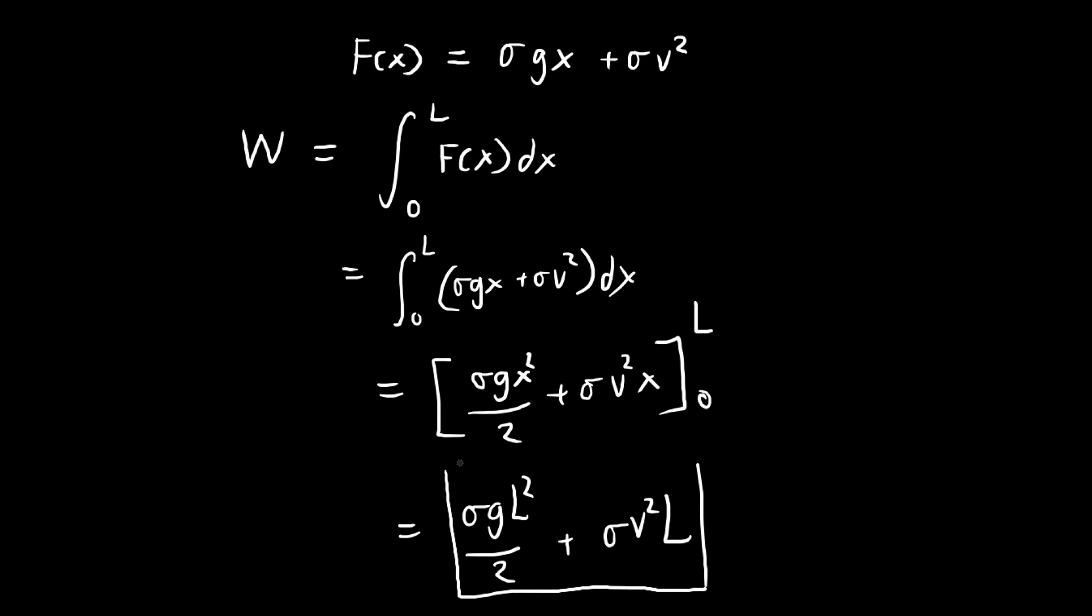So essentially we're done here already. This is the work done by our hand. But there's actually a more suggestive way to write this out. Remind yourself that sigma L is the mass of the chain. So let sigma L be equal to m. So first let us observe this term. There's a sigma L, so this is the mass. This right-hand side term here is equal to mv squared. So plus, what about this term? There's also a sigma L. So we get mgl over 2. So the work done is equal to mv squared plus mgl over 2.